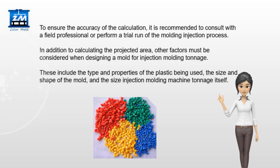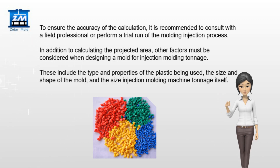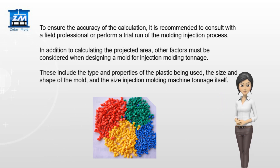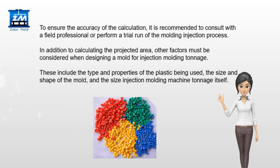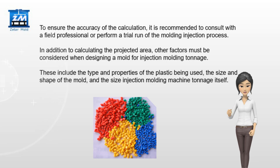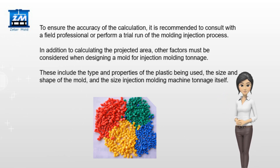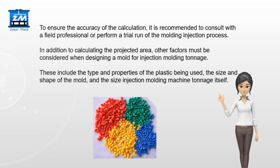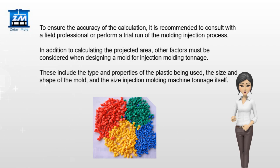To ensure the accuracy of the calculation, it is recommended to consult with a field professional or perform a trial run of the injection molding process. In addition to calculating the projected area, other factors must be considered when designing a mold for injection molding tonnage. These include the type and properties of the plastic being used, the size and shape of the mold, and the injection molding machine tonnage itself.